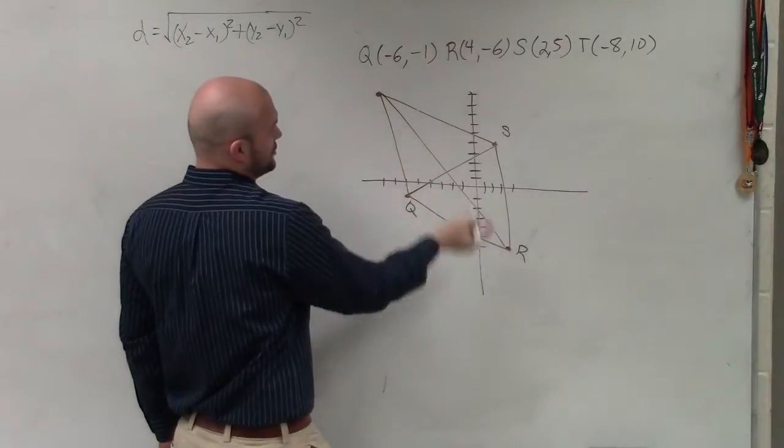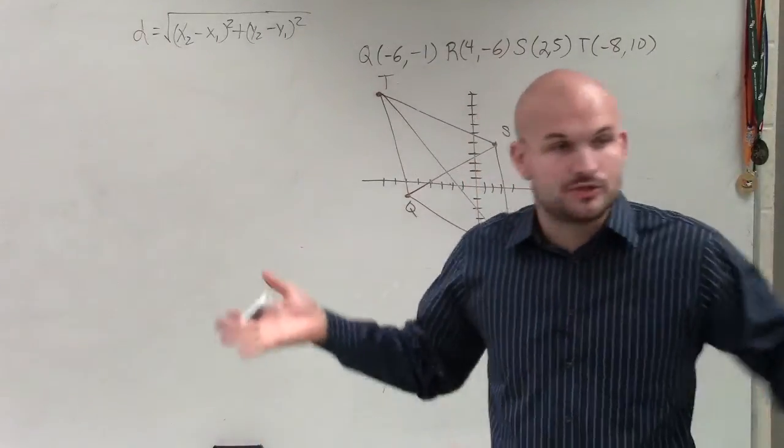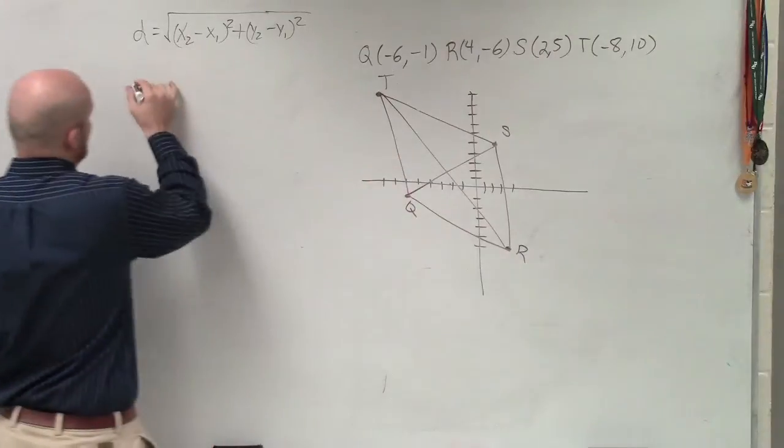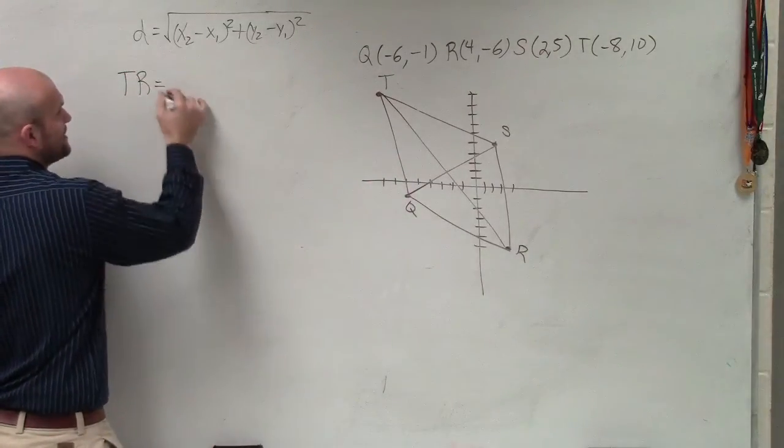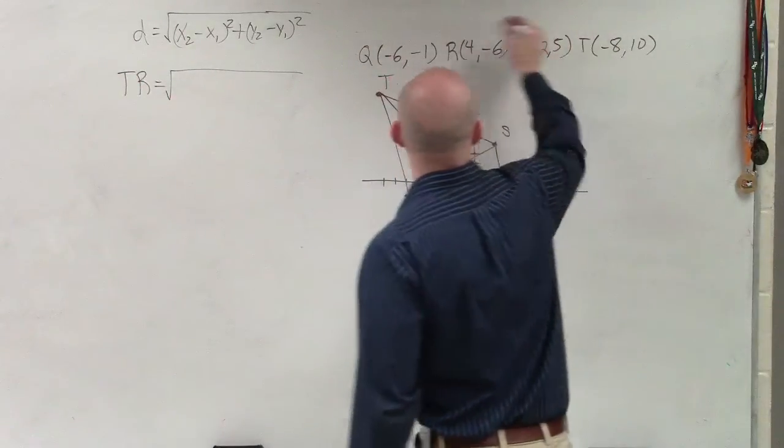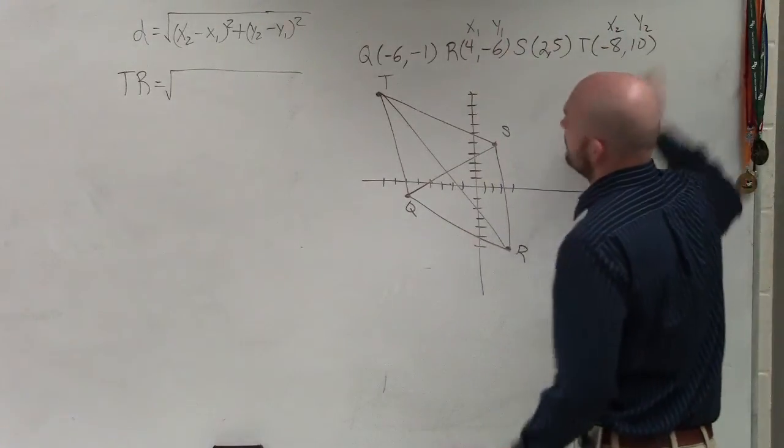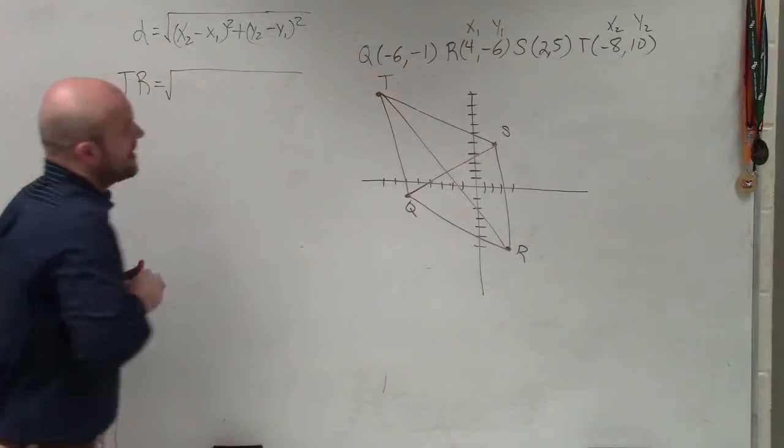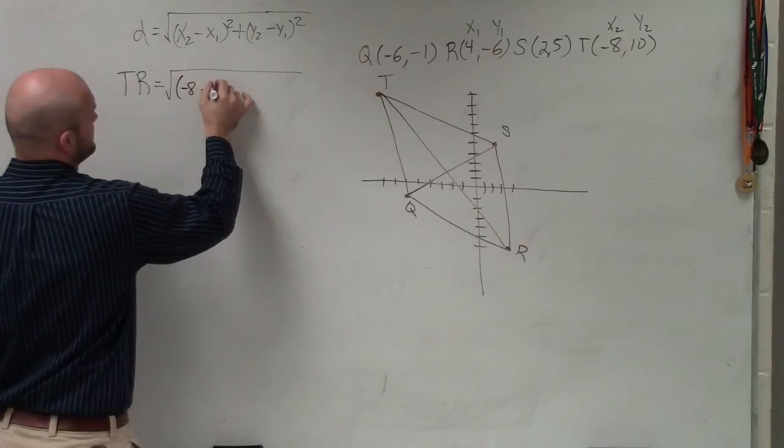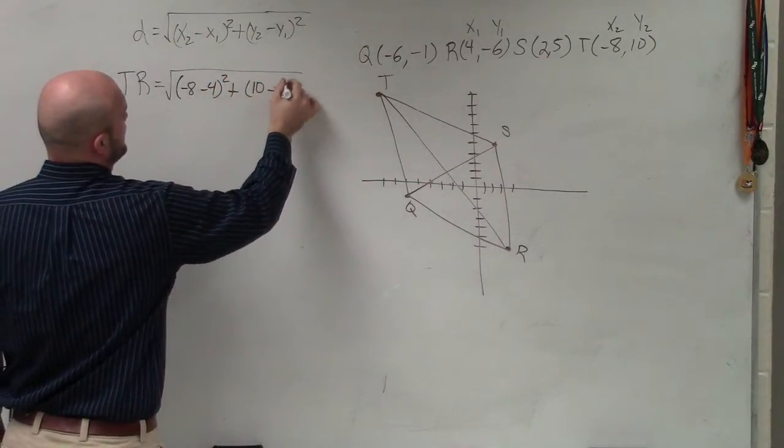So the distance formula. So what I need to do is find the distance between our two opposite points. So the first one I'm going to do is TR. So if I want to find the distance between TR, remember you've got to find x1 and x2. So I'll say TR, so I'll call that x1, that x2, that y1, that's y2. Then what I'll do is I'll just plug it in for the values into the formula. So therefore, I have (-8 - 4)² + (10 - (-6))².